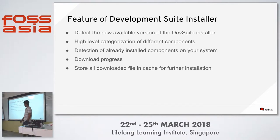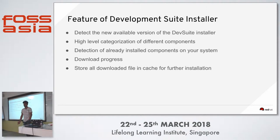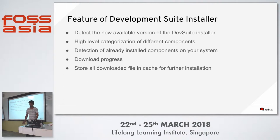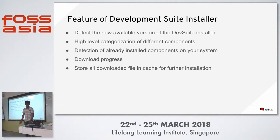A feature of the desktop application installer is that it detects whether it is updated or not. If there is a new version available, it will check whether you are using an old version or new version. If you are using an old version, it will show you a link to update. There are five highly categorized components: All, JDK/Java environment, and Container — for example CDK, Minishift, VirtualBox.